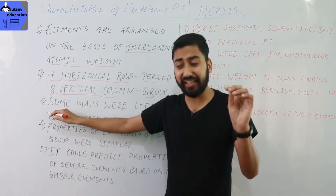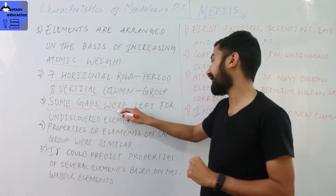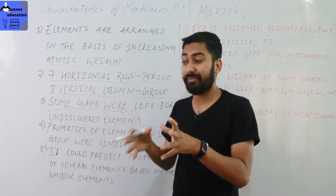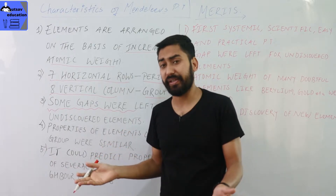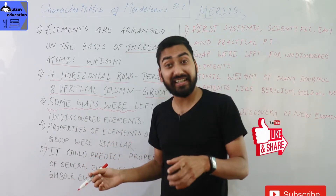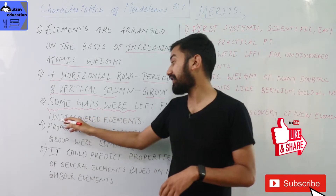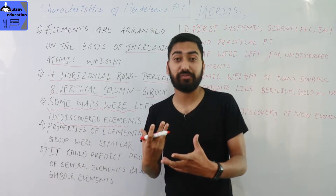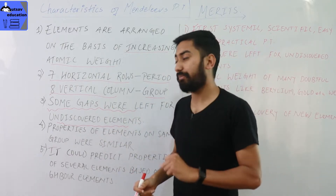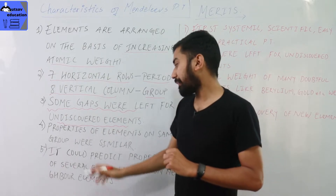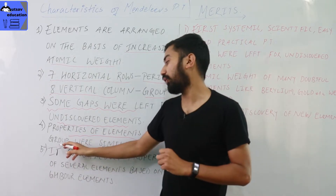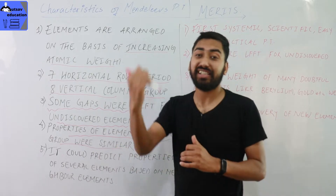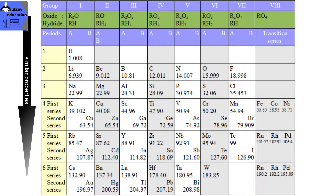Some gaps were left for undiscovered elements. Mendeleev left gaps in the periodic table because at that time some elements had not yet been discovered. These gaps indicated that elements would be discovered in the future to fill those positions. Properties of elements in the same group are similar.